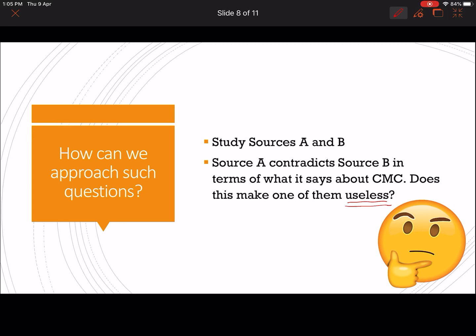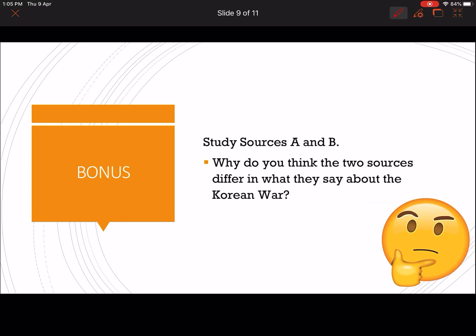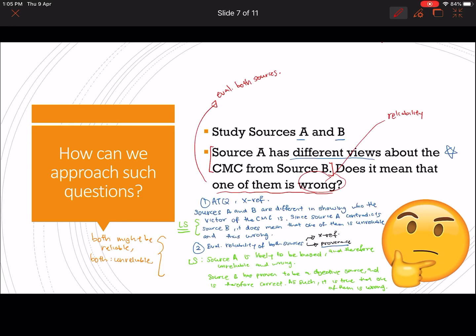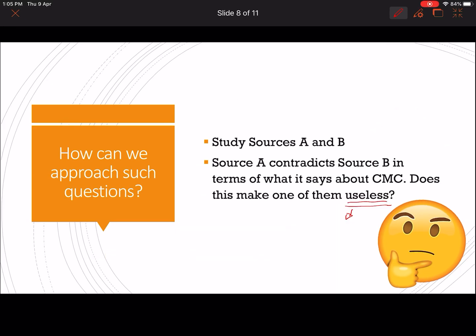Because why is it different here? You need to evaluate the usefulness of a source. So your linking statement, there needs to be something additional to this, is that you have to say reliable and therefore useful, or you are checking the provenance of the source and you are saying not reliable and therefore limited in usefulness.